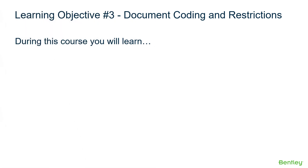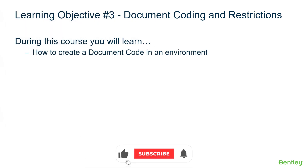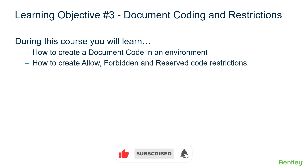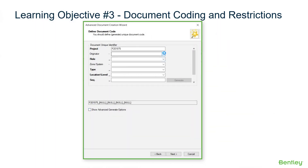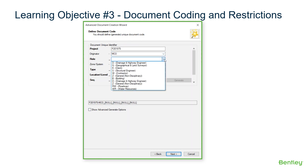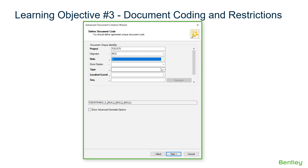During this section of the course, you'll learn how to create a document code in an environment, how to create allow, forbidden, and reserve code restrictions. The creation of an environment document code — a combination of attribute fields with separator characters — provides a way to uniquely identify documents within an environment.